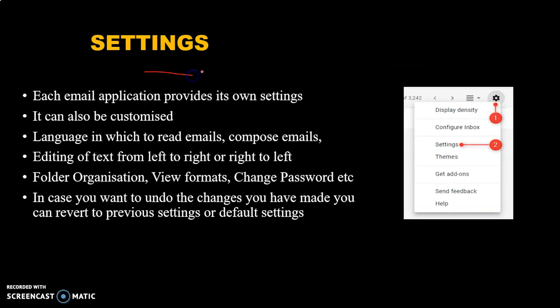Now we are going to see the Settings. All email applications provide their own settings. Whether you use Gmail or Yahoo, each has its own settings that can be customized. We can choose our language, edit text direction from left to right or right to left, create folders to group emails — from school, from friends, etc. We can change our password, change how the email application appears, change the background, and add a picture for our account. Everything can be done using the Settings option. This is the settings icon — once you click it, you can access the various customizations for your email application.